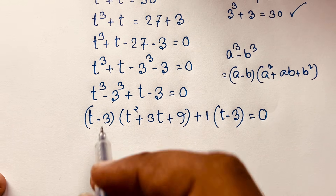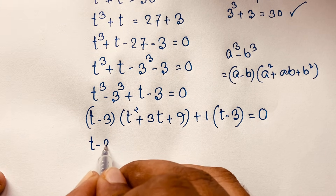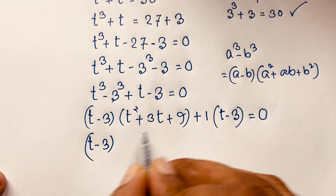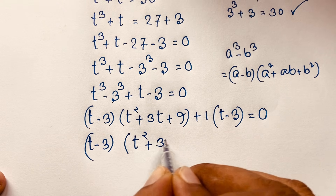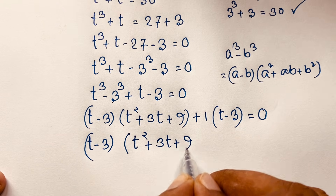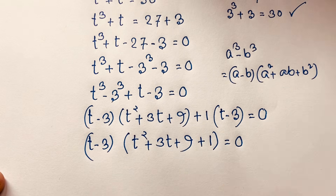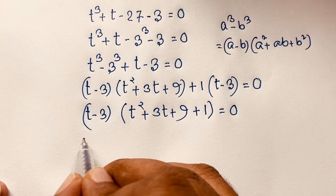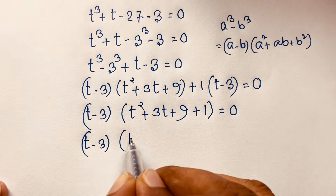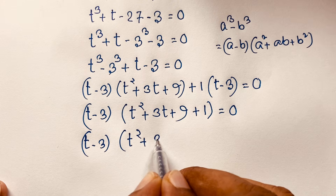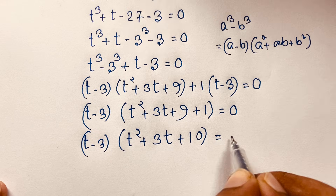At this moment you can see t minus 3 is common. So I take t minus 3 as a common factor. This gives t squared plus 3t plus 9, and dividing the remaining term gives positive 1, so the full factored form is: (t minus 3)(t squared plus 3t plus 9 plus 1) equals 0, which is (t minus 3)(t squared plus 3t plus 10) equals 0.